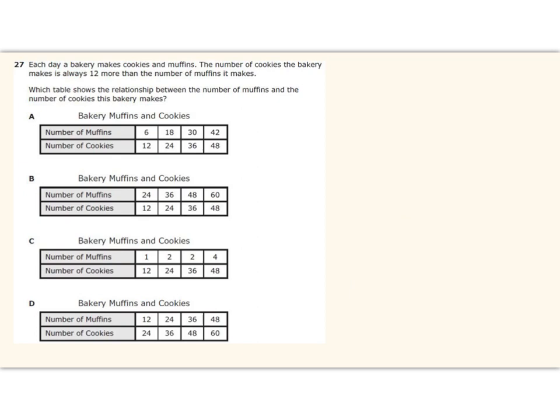Here we have a bakery and the number of cookies the bakery makes is 12 more than the number of muffins, so that means I should be able to add 12 to my muffins to get my cookies. The table that shows that the kids need to be able to say is the one that's the last choice here. So we add 12 and we get from our muffins to our cookies - it's an additive relationship. We have numbers paired up here and those are our number pairs, and so that's what third graders do with this. It's a real-world example.